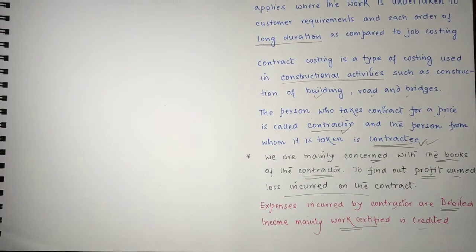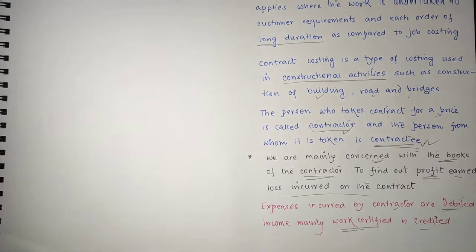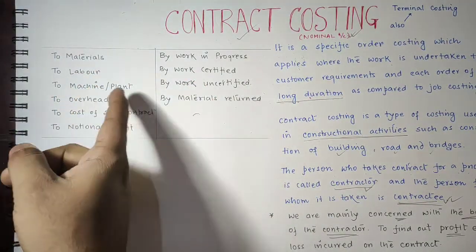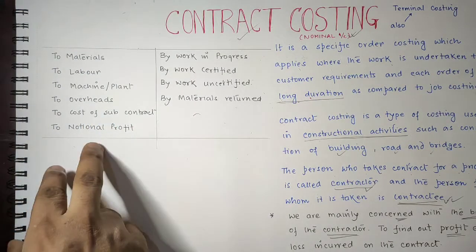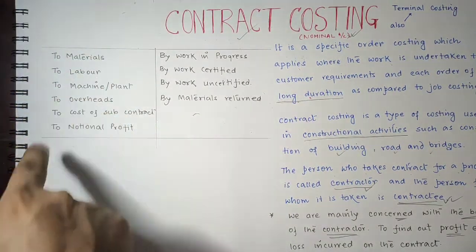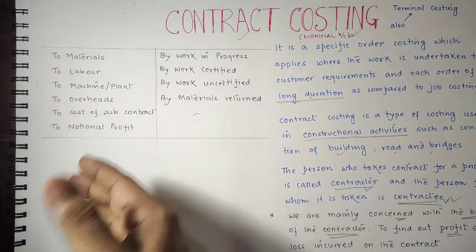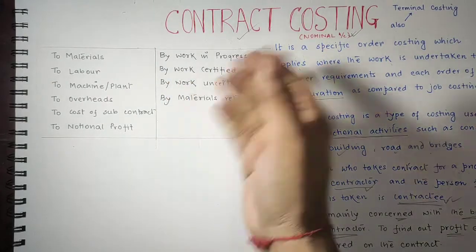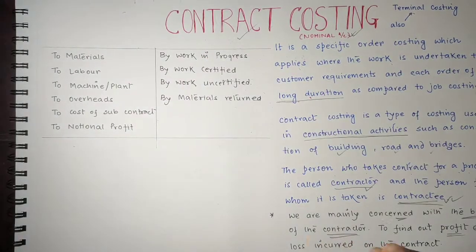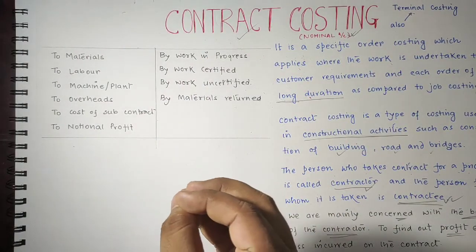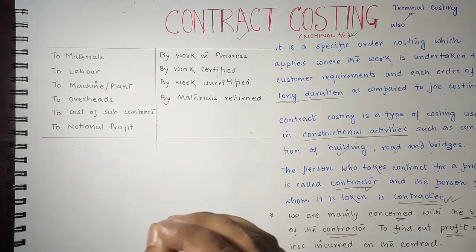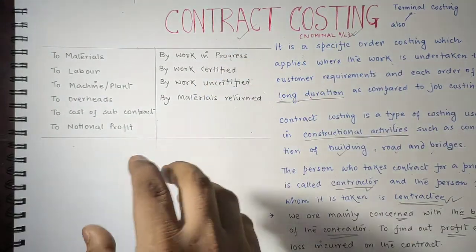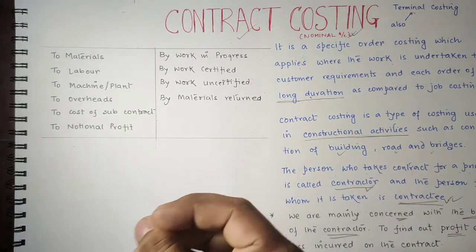Let us prepare the format of contract costing to make it clearer. On the debit side we have materials, labour, plant and machinery, overheads, cost of subcontract, and notional contract items — these are always part of direct material and direct expenses. On the credit side we have work in progress, work certified, work uncertified, and materials returned. Work in progress is the unfinished contract at the end of the accounting period and includes both work certified and work uncertified.